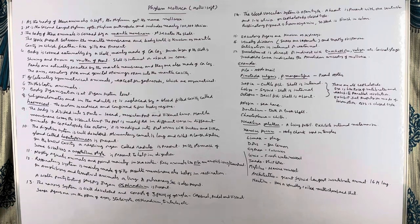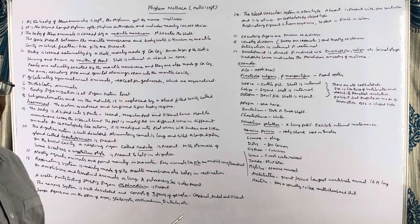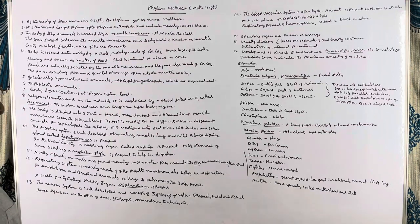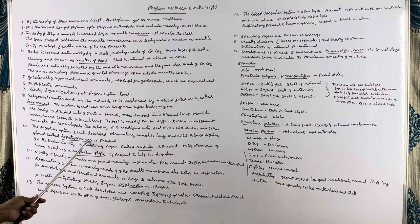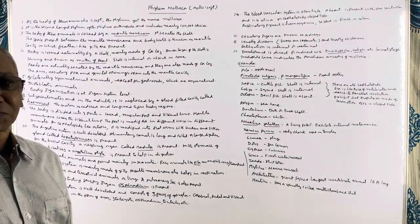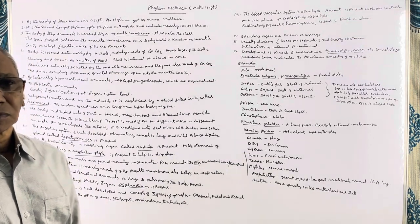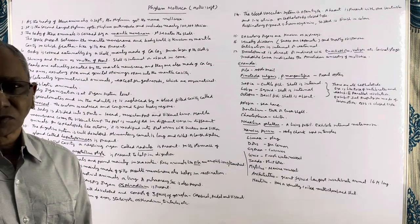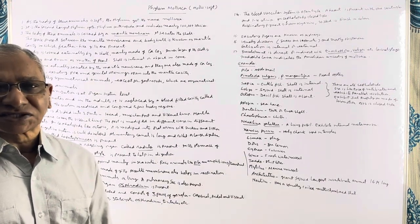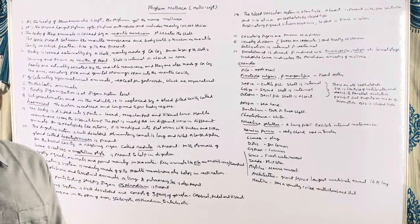The digestive system is well developed, longer than the length of the animal, and it remains coiled inside the body. They have a large digestive gland known as the hepatopancreas. In the buccal cavity of most mollusks, there is a rasping organ known as a radula. In bivalve mollusks, a crystalline style is found in their intestine or stomach, which helps in digestion of food.